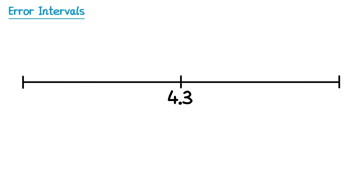To help us answer this question we're going to draw a number line and place 4.3 in the centre. On the left we're going to put the number that's one decimal place below 4.3, so 4.2, and on the right the one that's above it to one decimal place, 4.4.